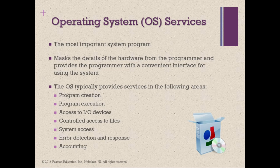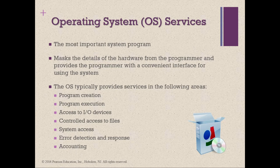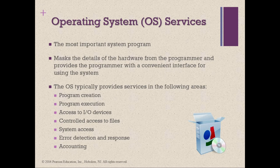Next is access to I/O devices. Each I/O device requires its own specific set of instructions or control signals for operation, and the OS takes care of those details so the programmer can think in terms of simple reads and writes. Following that is controlled access to files. Control must include understanding the I/O device nature — such as disk or tape drive — and the file format on the storage medium. The OS also provides protection mechanisms to control access to files in a multi-user system.